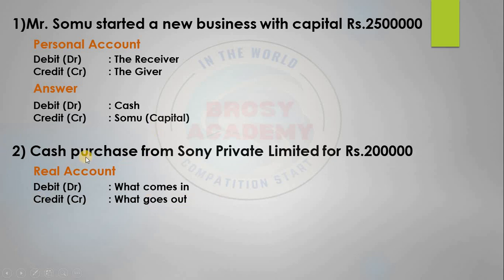Now we need to purchase. Purchase is what we need to buy. Debit is what comes in — goods comes in. What goes out is cash.